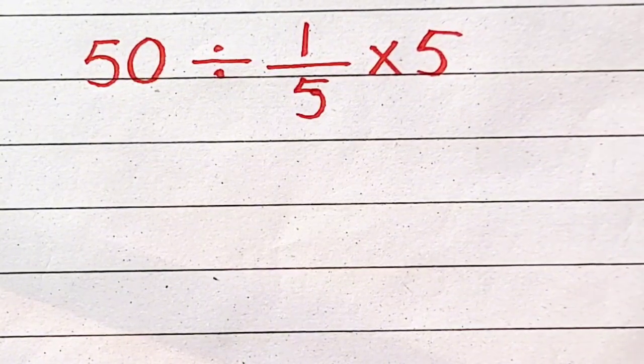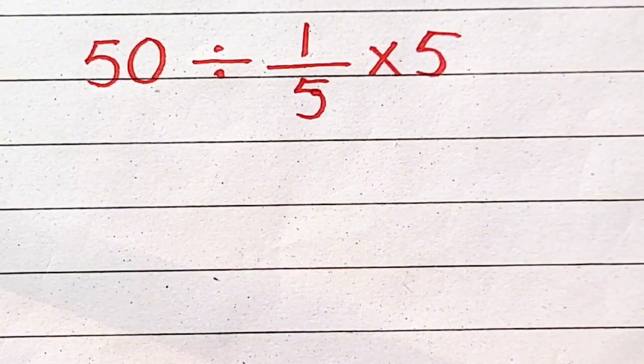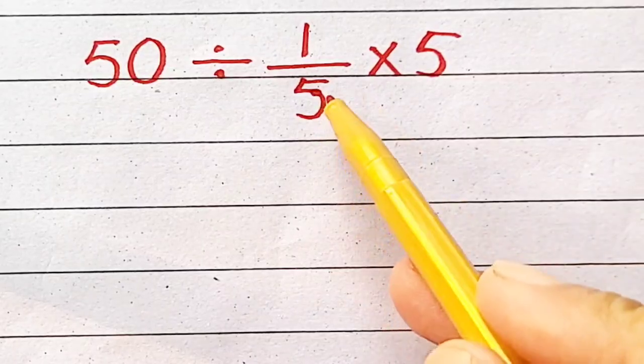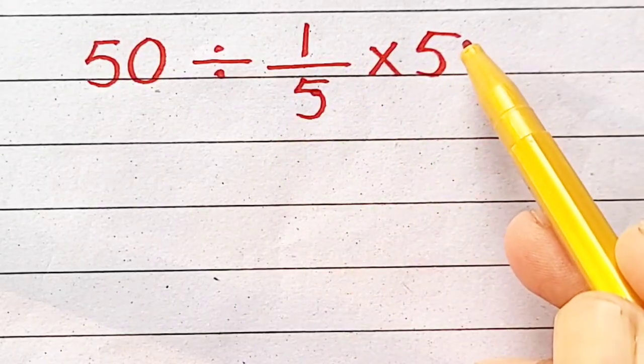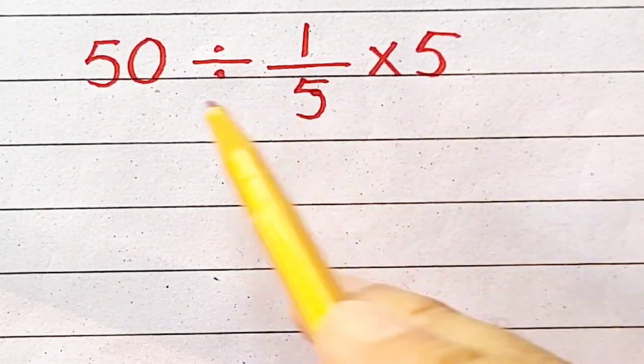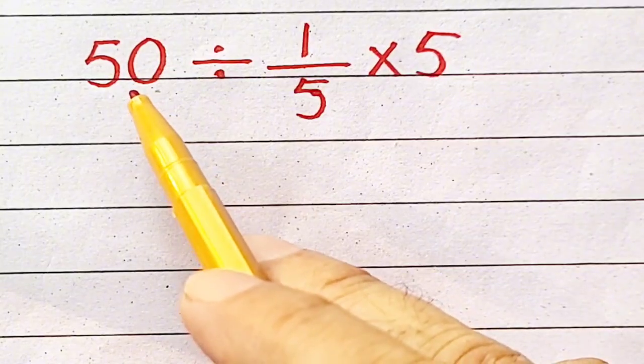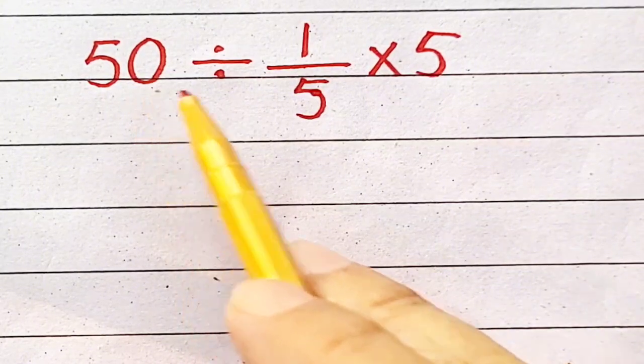This is a very interesting question, and mostly students cancel 5 and 5, so their answer will be 50, but it's wrong.